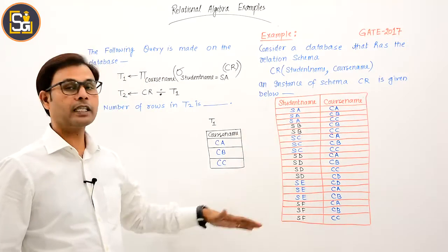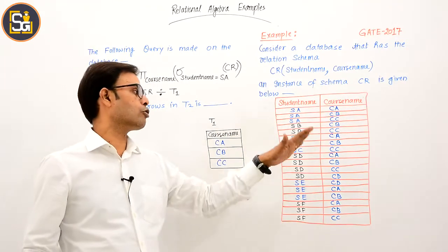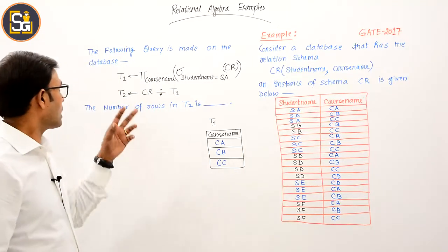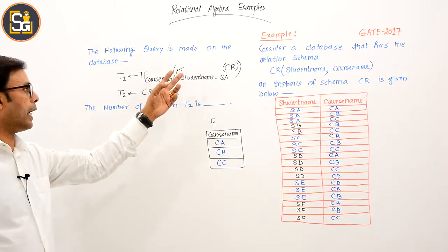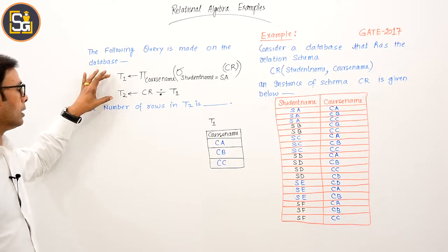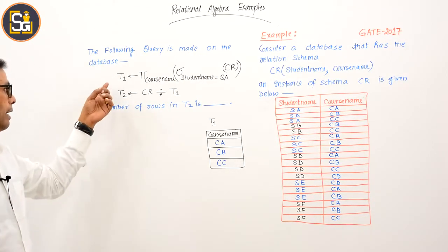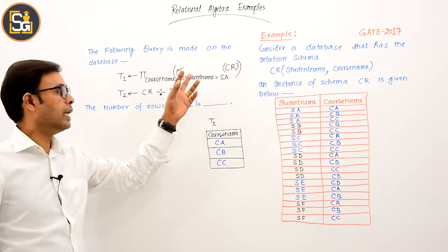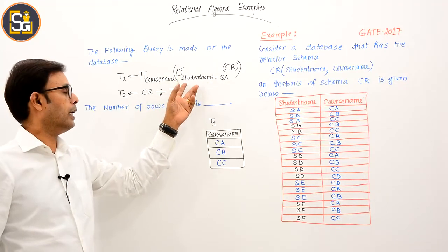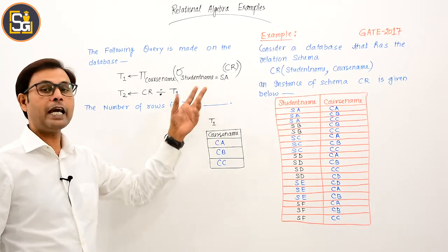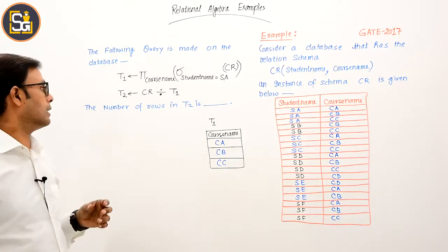These types of tuples are filled in the table. The following query is made on the database. These two operations are performed. T1 - selection is happening on the CR table. What is the condition? If student name is SA, then those tuples are selected.